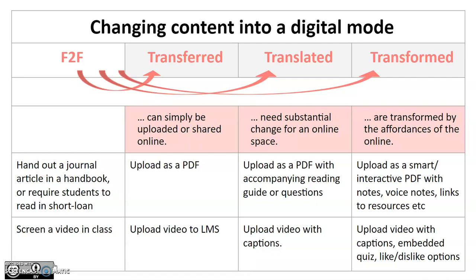Usually, when we're talking about changing content from a face-to-face mode into a digital mode, we refer to three terms. Face-to-face content can be transferred into a digital space, it can be translated for a digital space, or it can be transformed by a digital space. An example of transferring would be simply uploading a PDF that you normally issue in print form to your institutional LMS, to Vula. An example of translating a handout might include adding a reading guide or questions with a PDF. An example of transforming such an activity — normally handing out a journal article — would be to upload it as a smart or interactive PDF with notes, voice notes, links to resources, and possibly an activity like Hypothesis, which would allow students to comment collaboratively on the document.